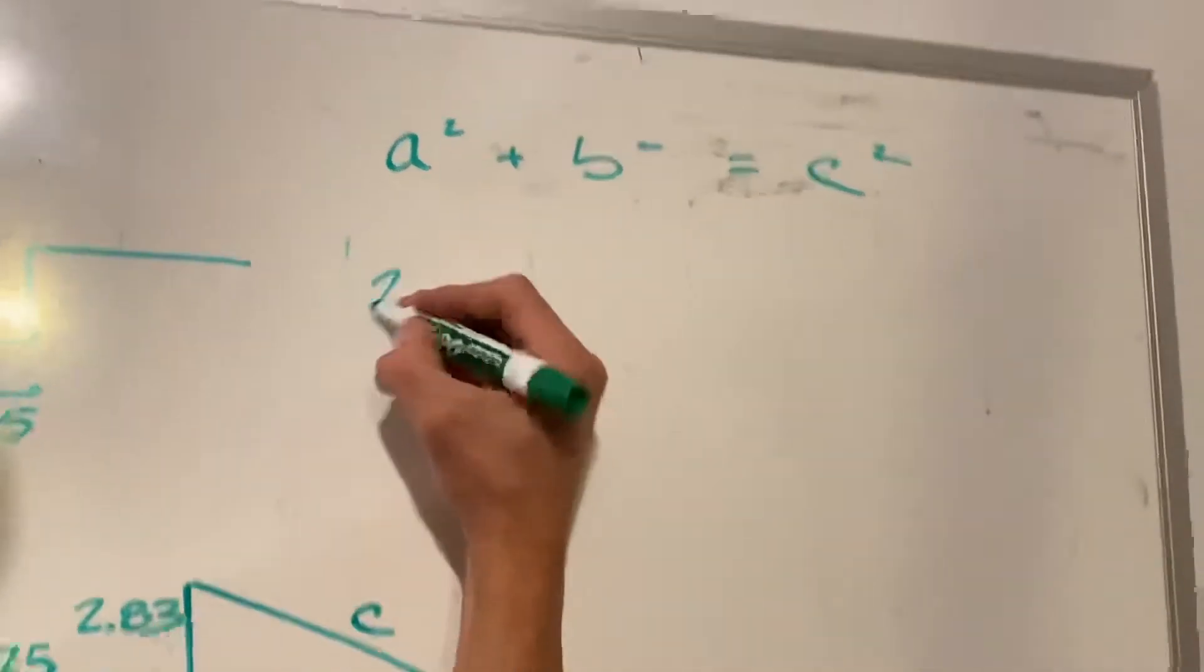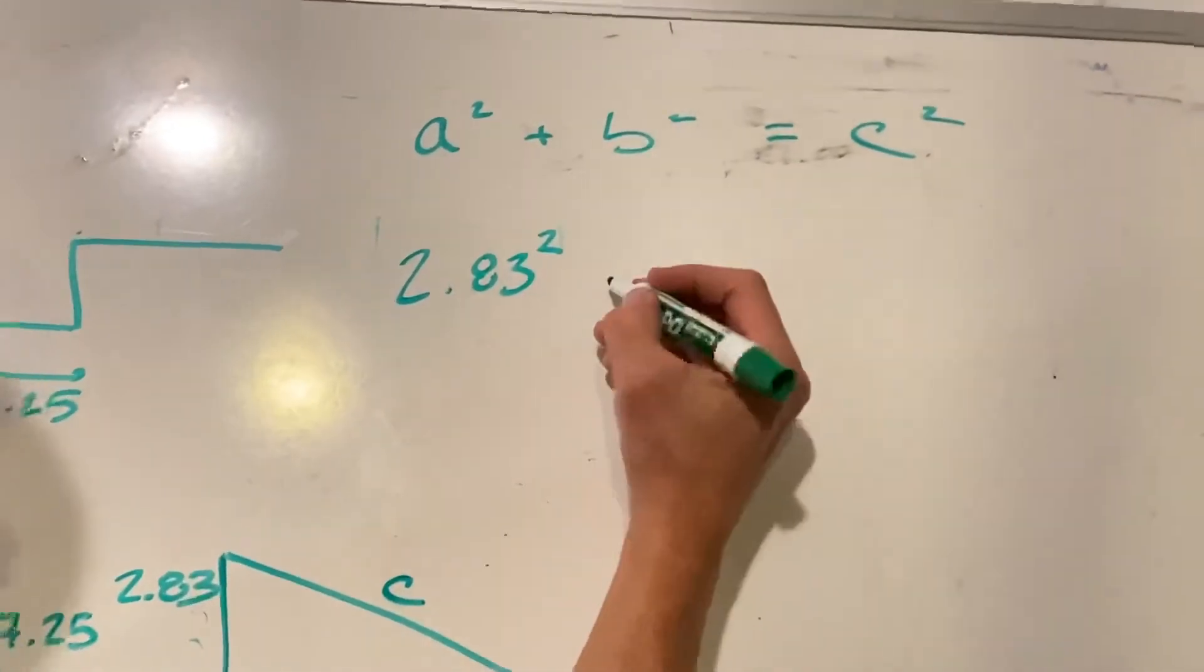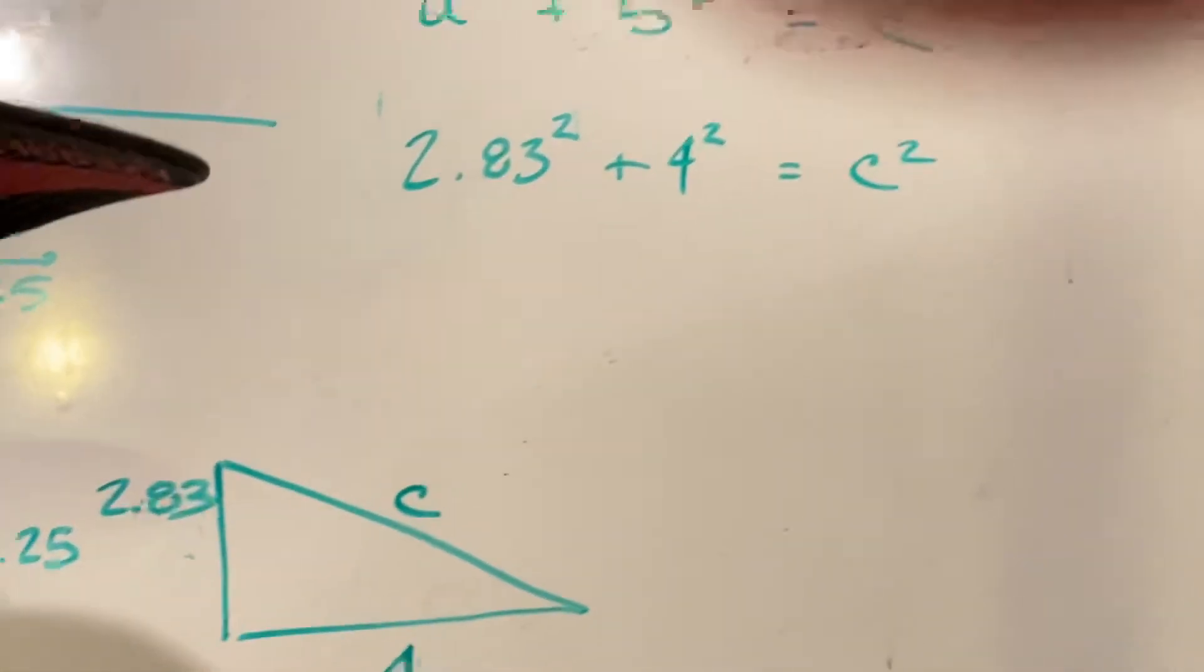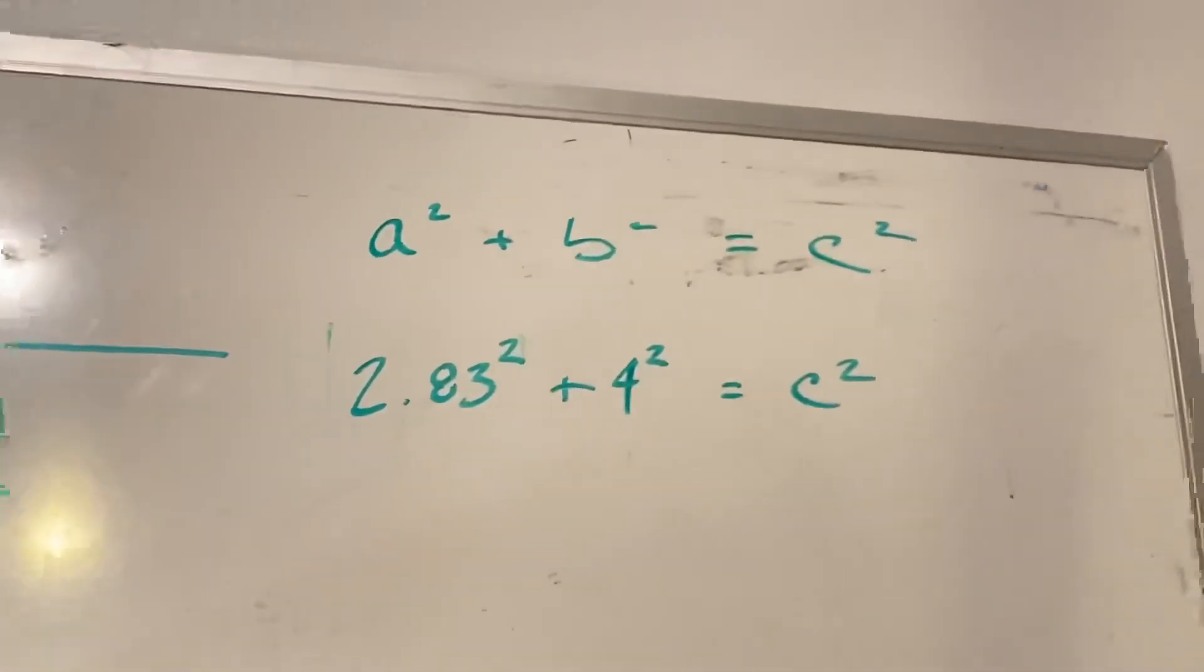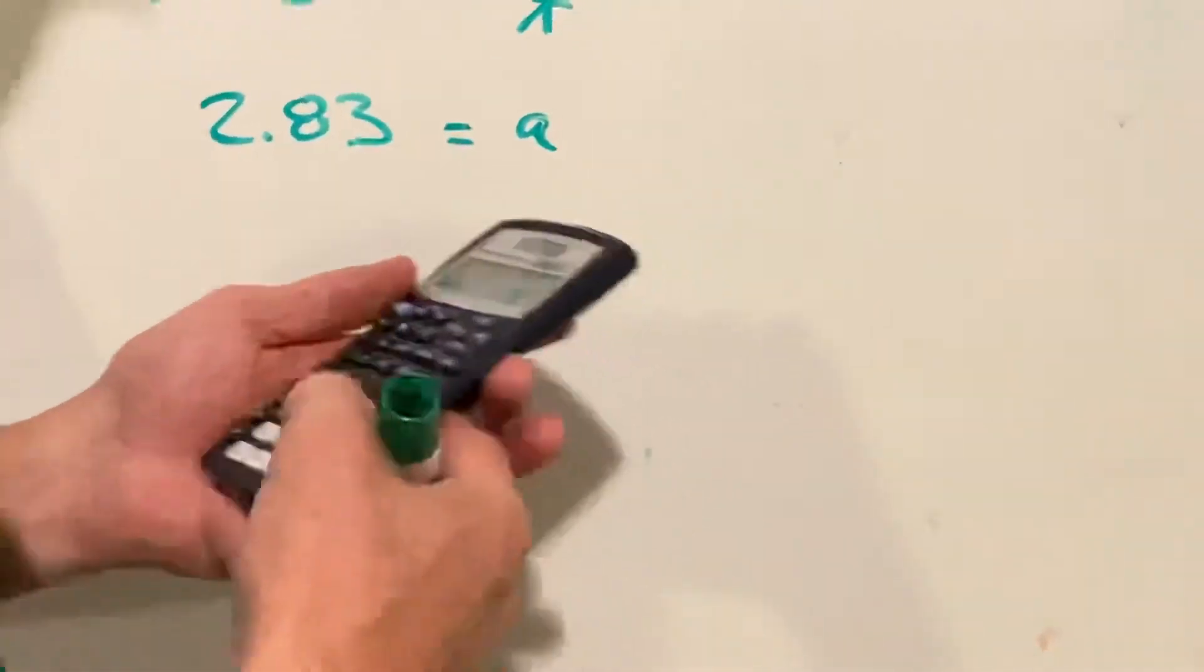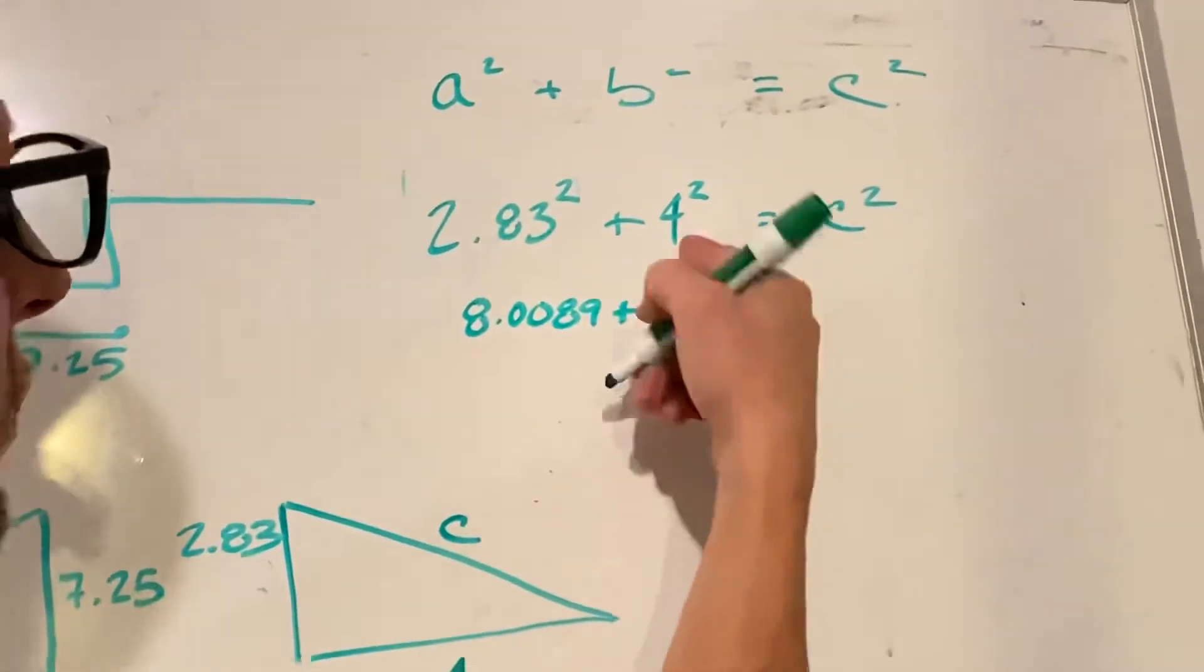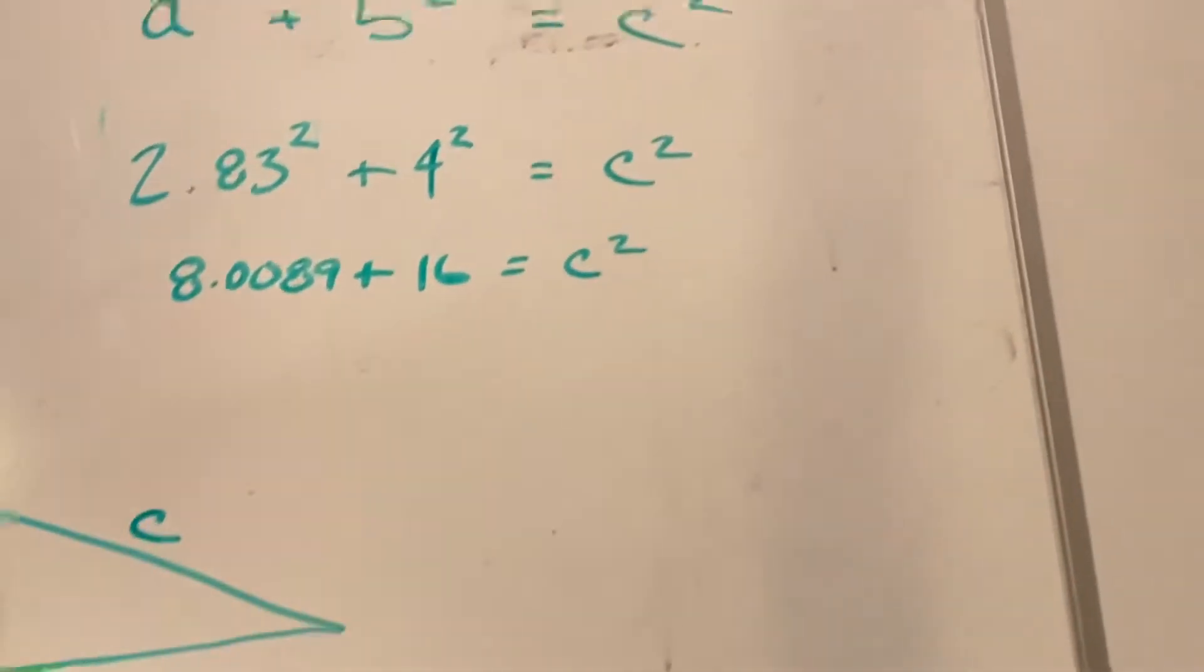We're going to use Pythagorean's theorem, which is a squared plus b squared equals c squared. So we know a, a is 2.83 and we're squaring it plus b squared, four squared will give us c squared. So when we do this in our calculator, this becomes 8.0089, four squared is of course 16.